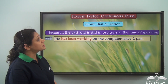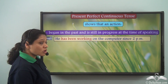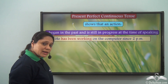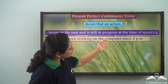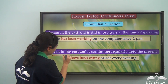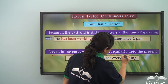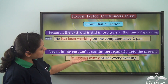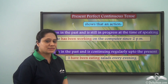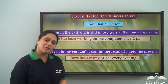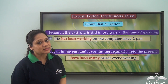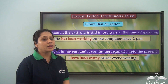So what did we learn today? We learnt that the present perfect continuous tense shows that an action began in the past and is still in progress at the time of speaking — for example, 'He has been working on the computer since 2 p.m.' It also shows that an action began in the past and is continuing regularly up to the present — for example, 'I have been eating salads every evening.' The present perfect continuous tense is slightly difficult, but doing lots of exercises will help you understand it in no time.